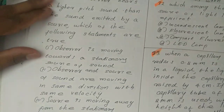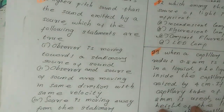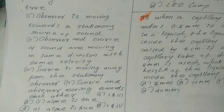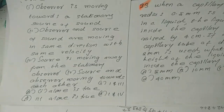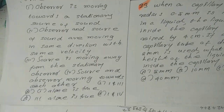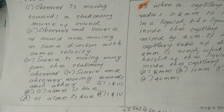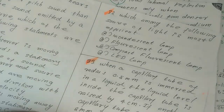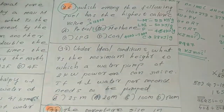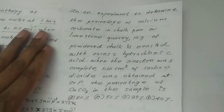MCQ: If an observer hears a higher pitch sound than that emitted by a source, which statement is true? Option 1: observer is moving towards a stationary source. Option 2: observer and source moving in same direction with same velocity. Option 3: source moving away from stationary observer. Option 4: source and observer moving towards each other. Answer: options 1 and 4 are true.